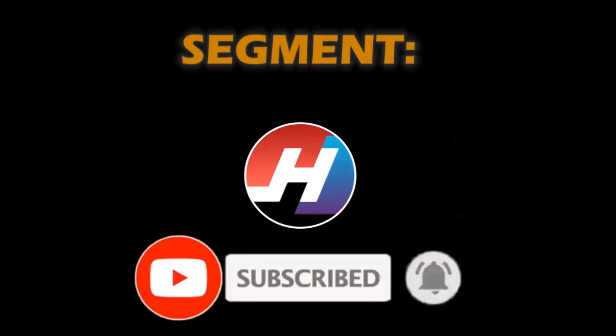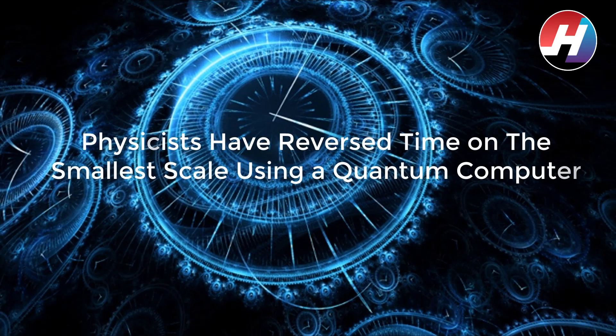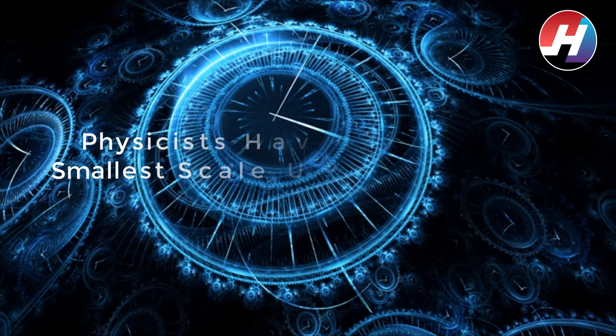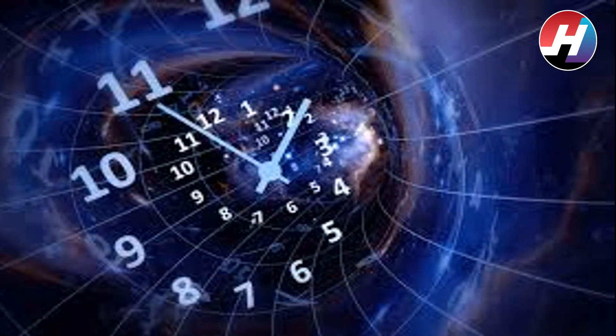Subscribe to our channel for more and hit the bell icon. Hello friends, we are back with a new topic. Physicists have reversed time on the smallest scale using a quantum computer. It's easy to take time's arrow for granted, but the gears of physics actually work just as smoothly in reverse. Maybe the time machine is possible after all.